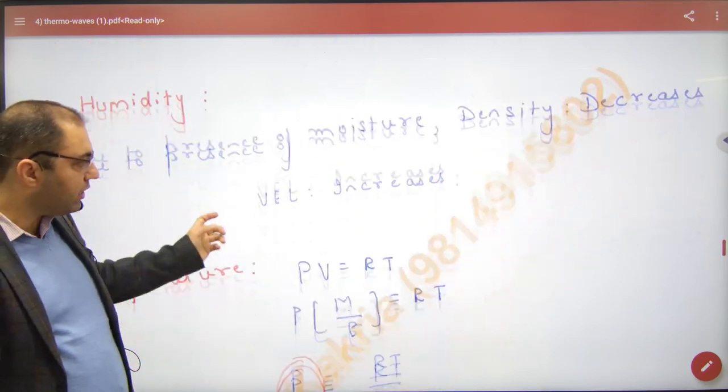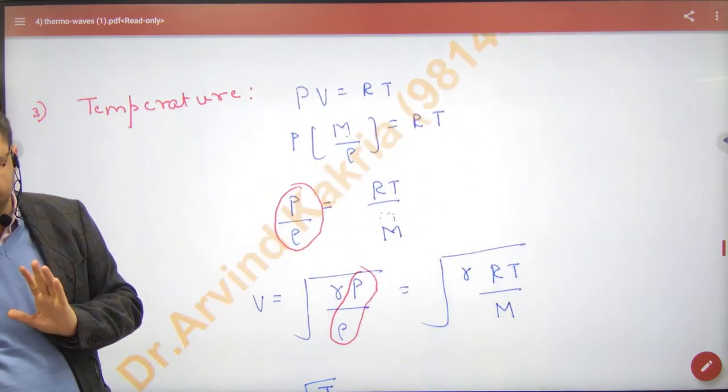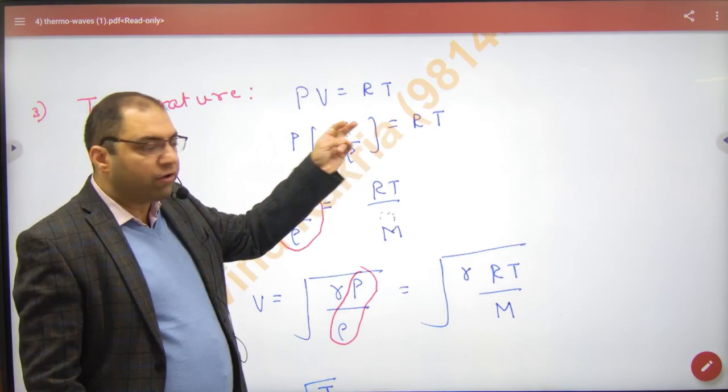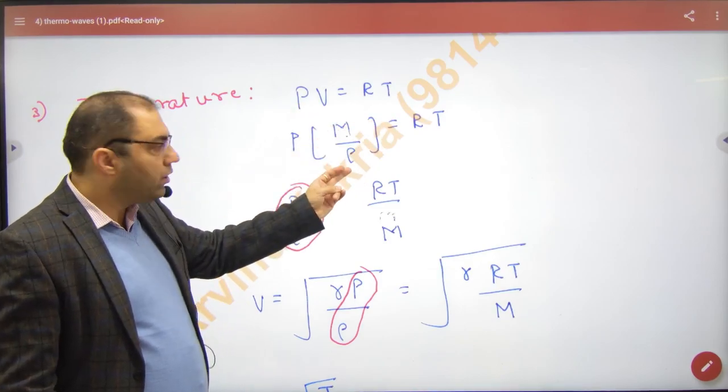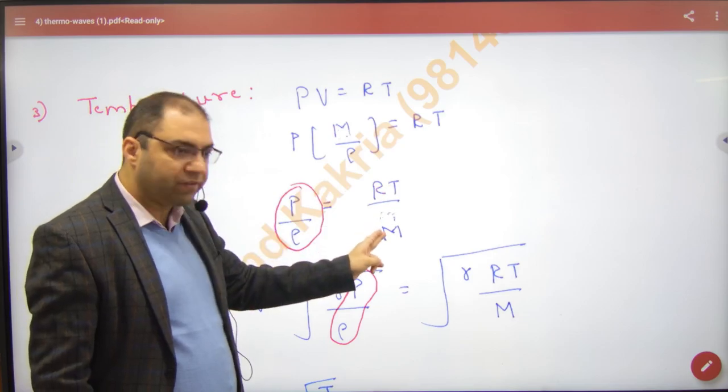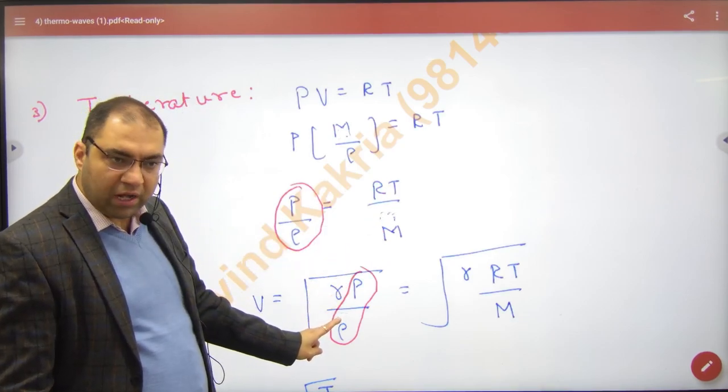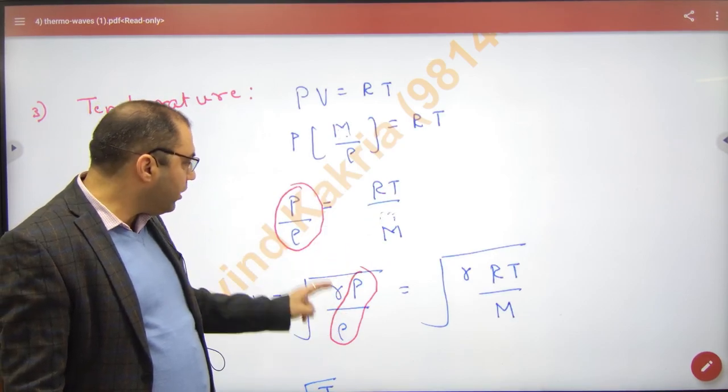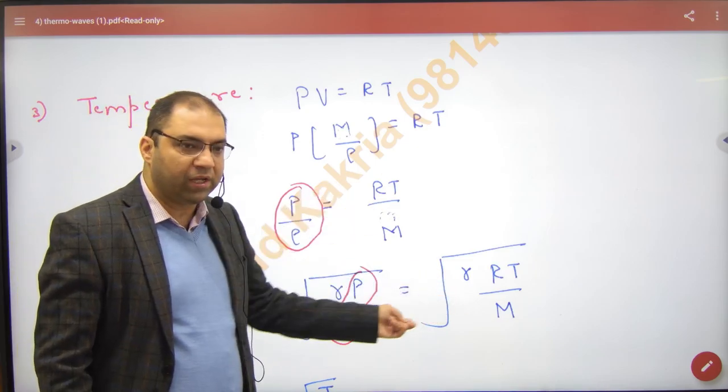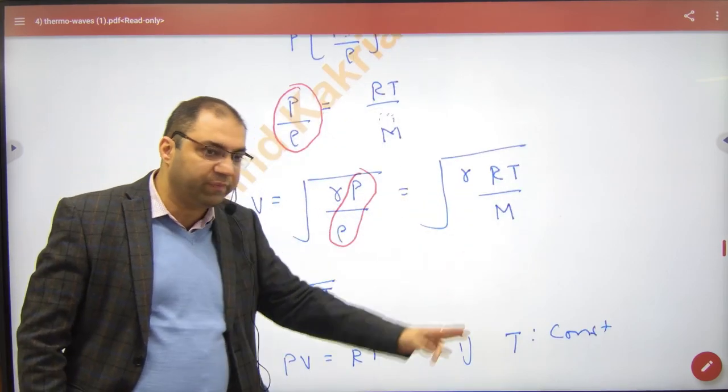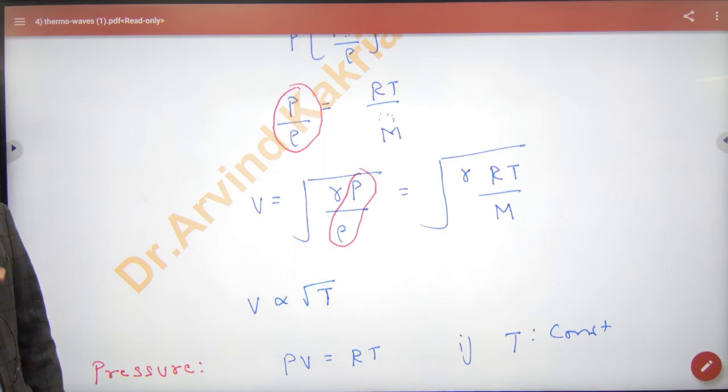The third factor is temperature. PV is equal to RT. Volume is mass by density. Pressure and volume on one side. Velocity of sound is gamma P by rho. P by rho put RT by M. These are the two sound speed formulas. Both will be used in numerical problems.